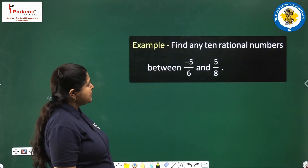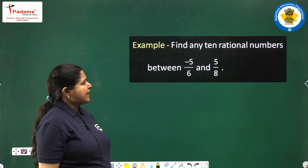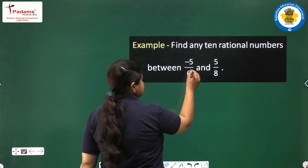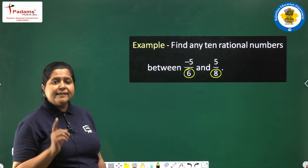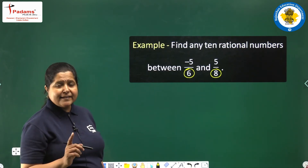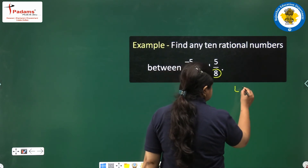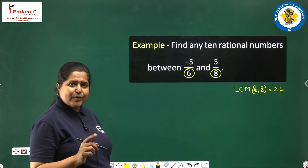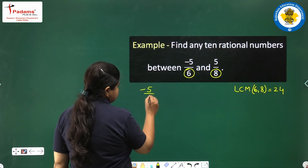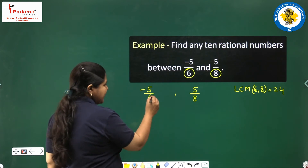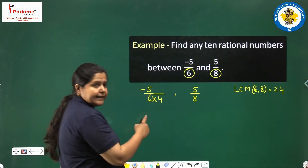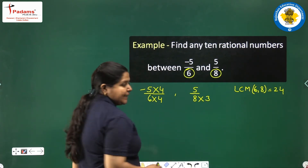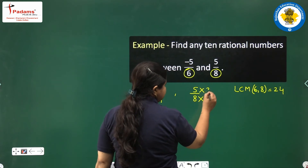Find any 10 rational numbers between minus 5 by 6 and 5 by 8. For this, the denominators must be the same. They are 6 and 8. Take the LCM of 6 and 8, which comes out to be 24. So let us make the denominators 24: for minus 5 by 6, multiply by 4 in numerator and denominator; for 5 by 8, multiply by 3 in numerator and denominator.